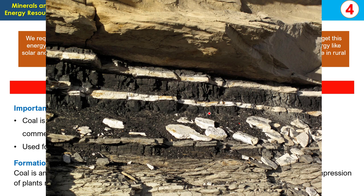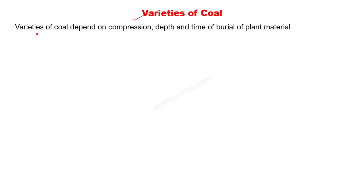Looking at a picture, you can see how different layers of coal form over millions of years, with sandy stones visible between them. The deeper the formation, the better the quality of coal. Varieties of coal depend on compression, depth, and time of burial. We will study four varieties: peat, lignite, bituminous, and anthracite.